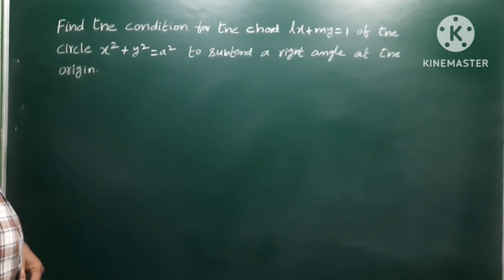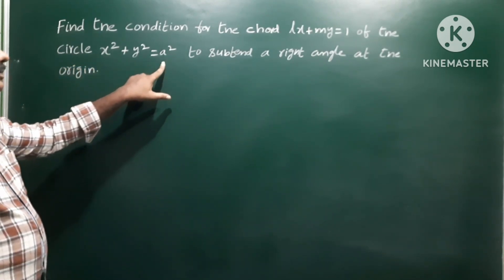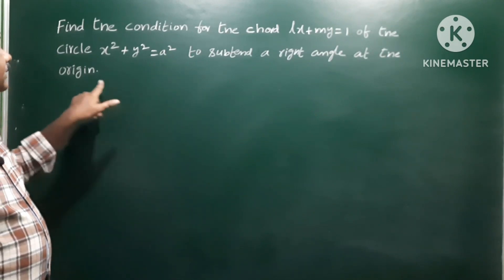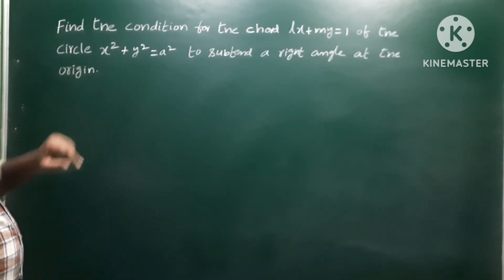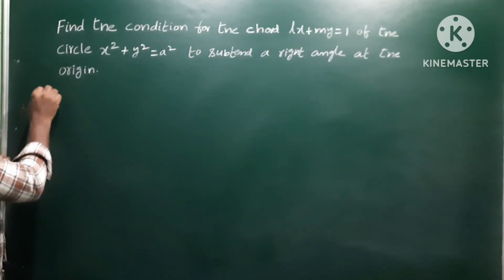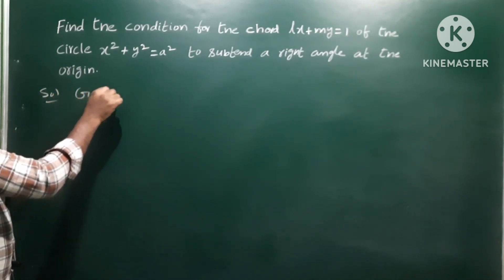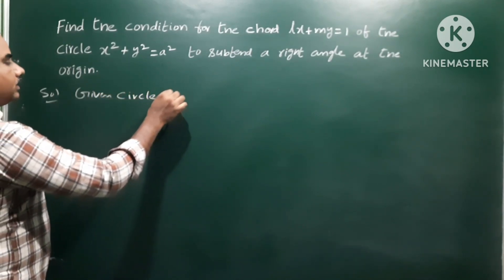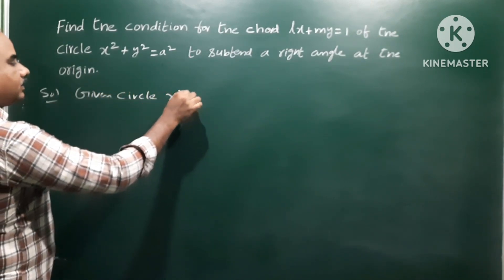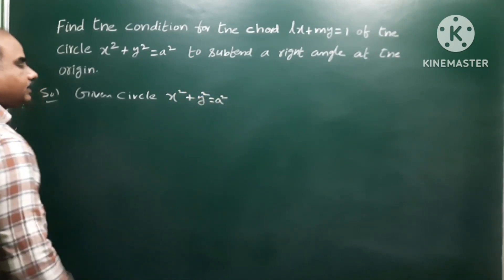Find the condition for the chord Lx plus My equals 1 of the circle x squared plus y squared equals a squared to subtend a right angle at the origin. Given circle: x squared plus y squared equals a squared.